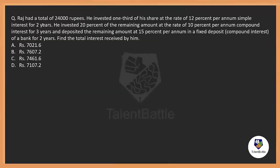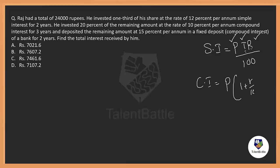The next question is from the concept of simple and compound interest. The formula for simple interest is SI = PTR/100, where P is principal, T is time period, and R is rate of interest — both T and R should be in the same unit (years or months). The formula for compound interest is CI = P × (1 + R/100)^N − 1, where N is the time period.